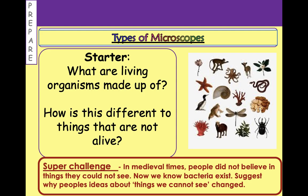Once you've done that, have a look at the starter questions on the board. These are really just to gauge where you're at — what you know and what you remember about microscopes. The first question asks: what are living organisms made up of, and how is this different to things that are not alive — things that were never alive in the first place? So we're comparing trees to metal or plastic. There is also a super challenge at the bottom of the board, so if you find the first few questions easy, have a look at that as well. Pause the video, have a little think, and then we'll see where you are.